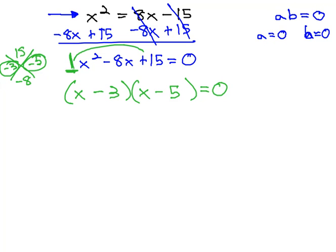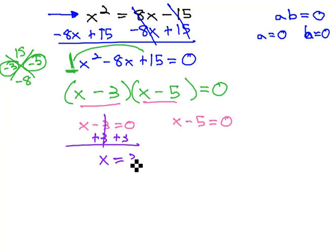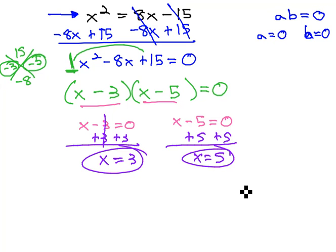Once we have two factors that equal zero, we know either the first factor, x minus 3 equals zero, or the second factor, x minus 5 equals zero. Quickly solve these by adding 3 to get our first answer, x equals 3, and adding 5 to get our second answer, x equals 5.